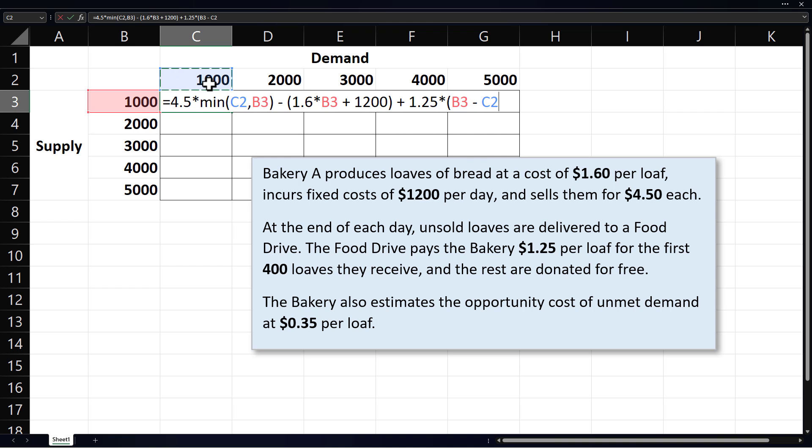Now in the cases where demand is greater than supply, this difference will be negative. And we don't want to multiply 1.25 by a negative number. One way to ensure that is to multiply 1.25 by the maximum of this difference and 0. In other words, if this difference is negative, which means demand is greater than supply, we want to multiply the 1.25 by 0.